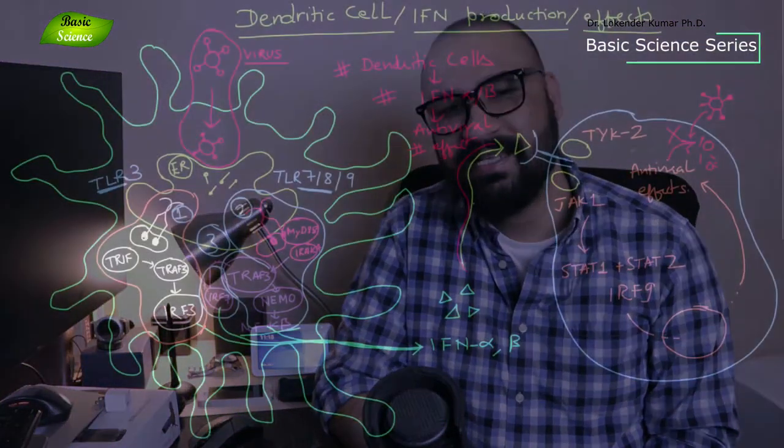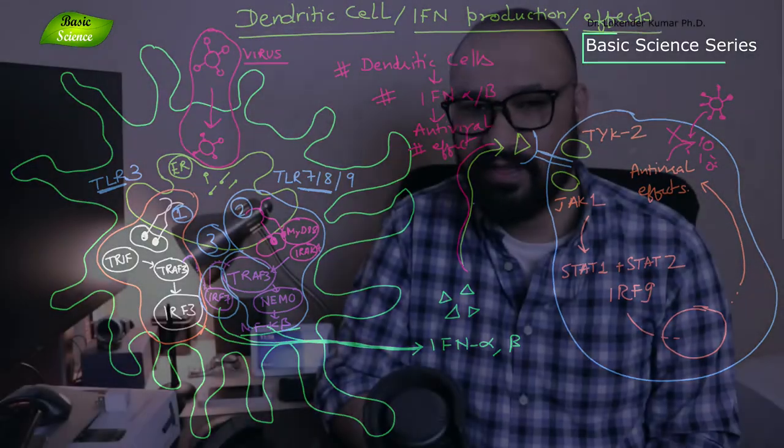In this video we will discuss the function of dendritic cells, especially focusing on interferon production. We'll also discuss the effect of interferon on other cell types. Whenever there is a virus infection or viral particle trying to enter inside our body, our body responds in a particular way. Dendritic cells are important cells that provide innate immunity. These cells produce interferon molecules that protect our cells from viral infection. We'll discuss how interferon alpha and beta protects our cells, and the role of toll-like receptors 3, 7, 8, and 9 — the endosomal toll-like receptors.